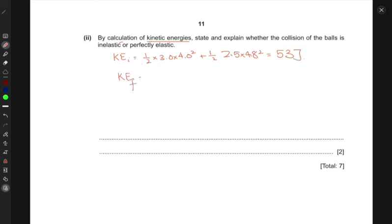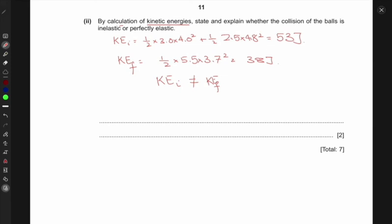Now, what about the final kinetic energy? That would be half times 5.5 times 3.7 squared, which gives 38 joules. You can see that the initial kinetic energy is not equal to the final kinetic energy. This implies that the collision is inelastic.